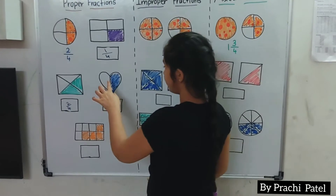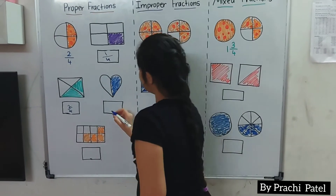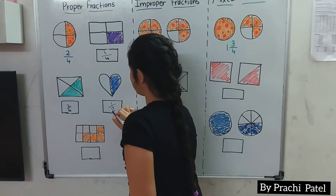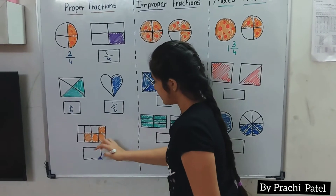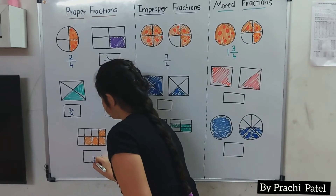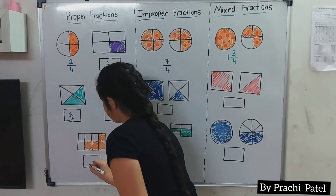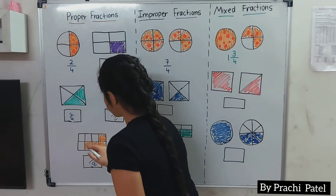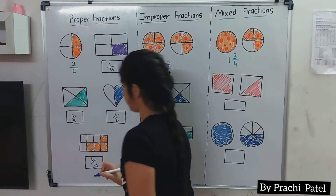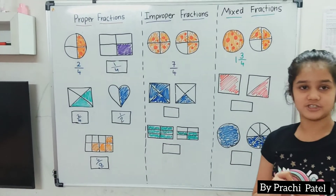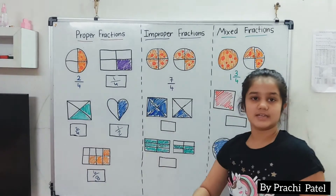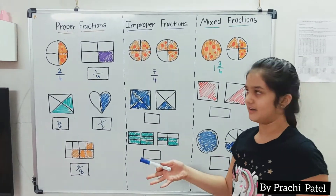Now we have another shape. We have 2 parts and 1 is shaded. Then we have another with 8 parts, and we colored 4 of them. So this is the proper fraction, where the denominator is bigger than the numerator.